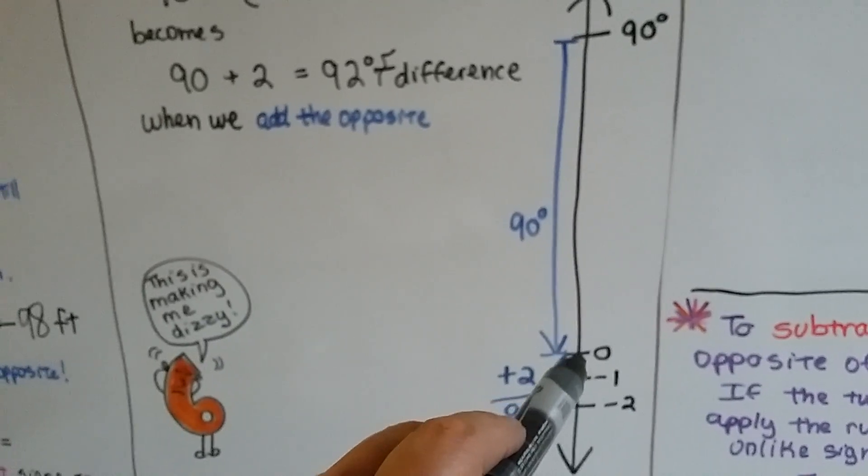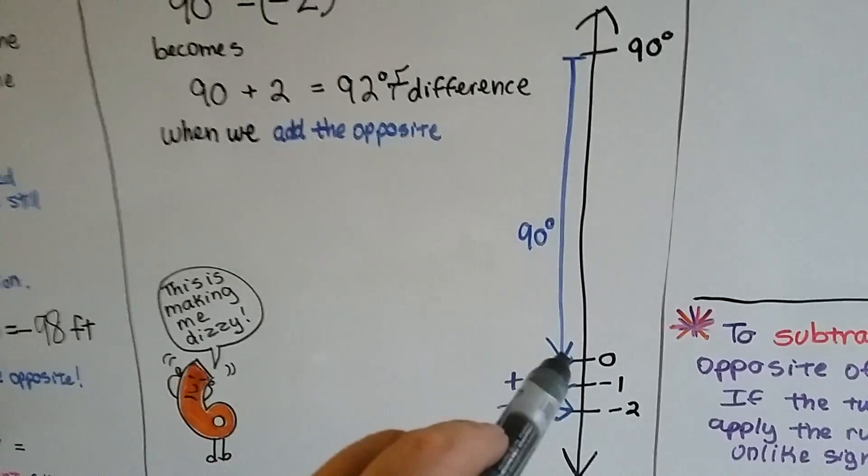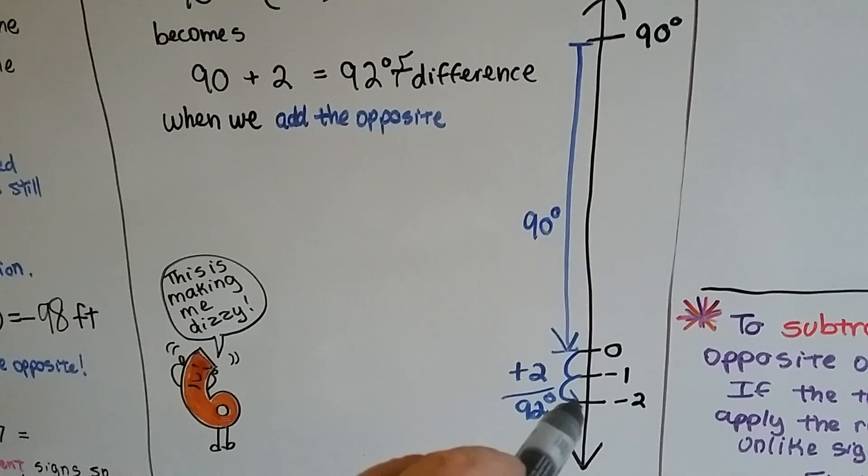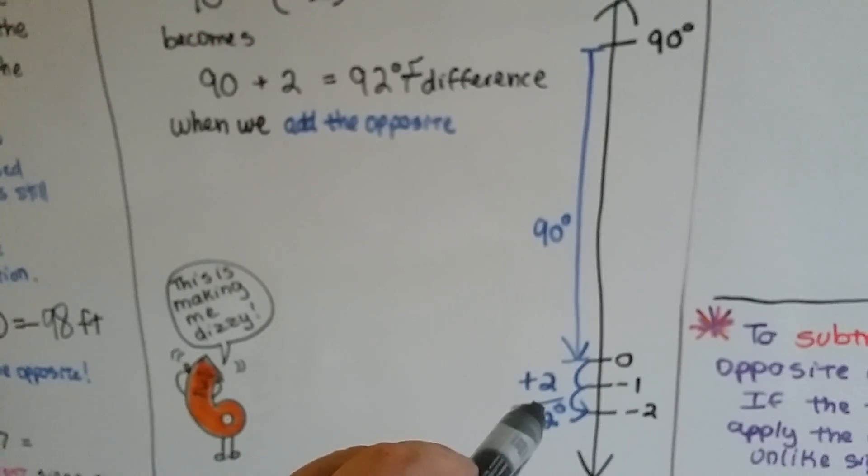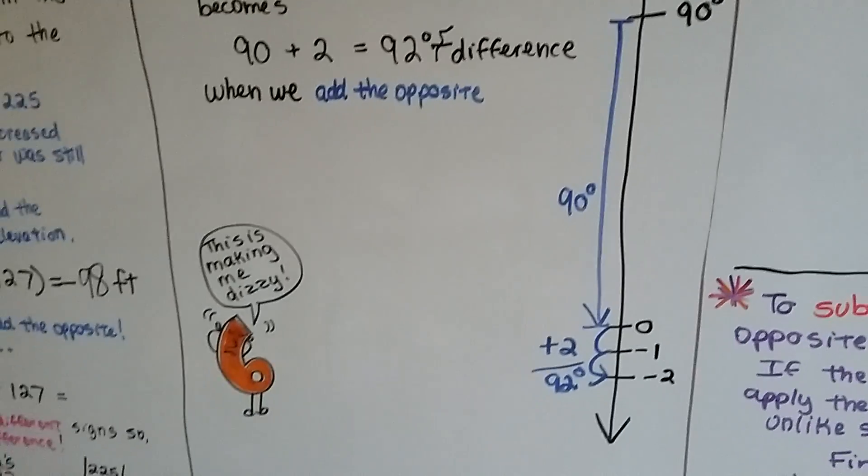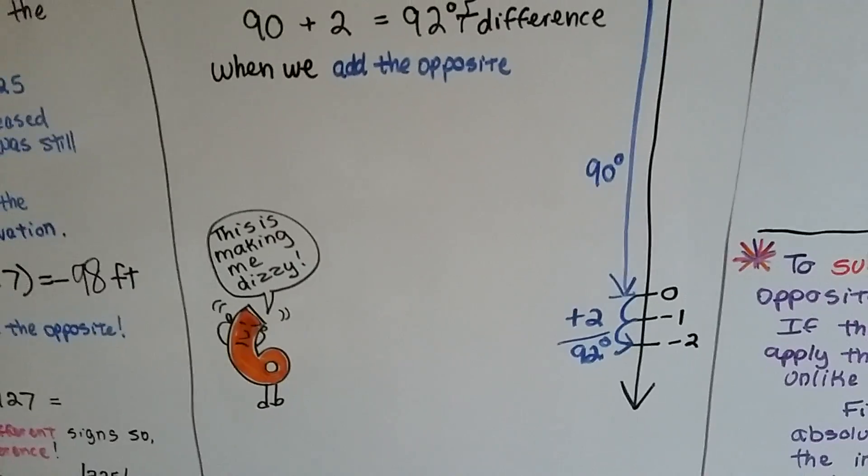And then below 0, the negative 2 is 1, 2 degrees below 0. If we add the 90 degrees to the 2 degrees that it is below 0, we get 92. See, little 6, it's not that hard.